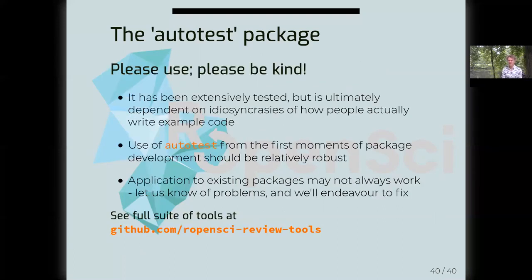To conclude, the AutoTest package is sufficiently developed to be usable for most people, has been extensively tested, and the recommendation is that AutoTest should be used from the first moments of package development. If you start off with a trivial function and concentrate on ensuring that AutoTest generally returns null every time you run it, then that usage should be sufficiently robust. Application to existing packages may not always work straight away, so please let us know of any problems. This package is available along with other packages to aid the general review process at the GitHub organization rOpenSciReviewTools.